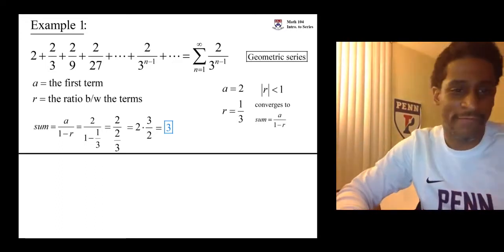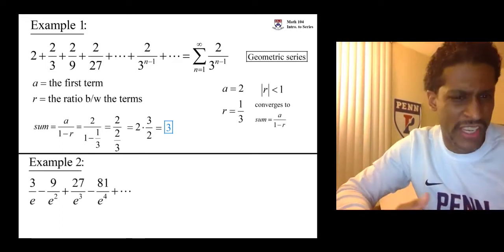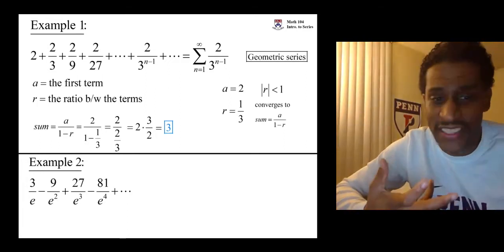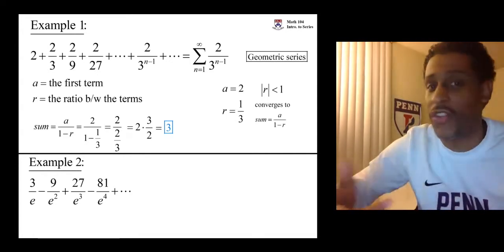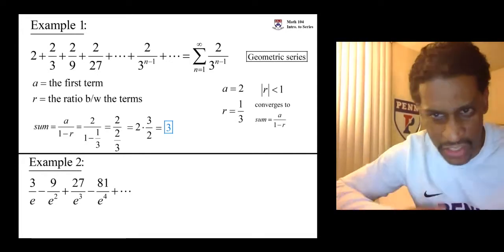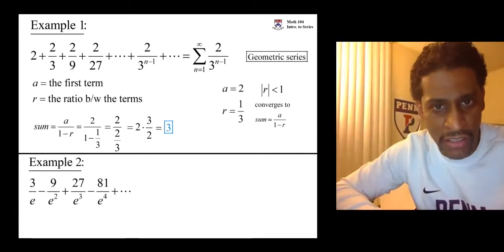Let's see another. 3 over e minus 9 over e squared plus 27 over e cubed minus 81 over e to 4th and so on. This time we don't have a general term. We don't have the summation, but that's okay.